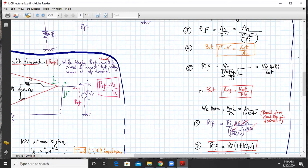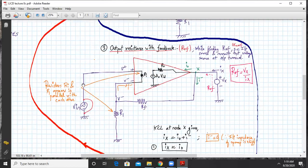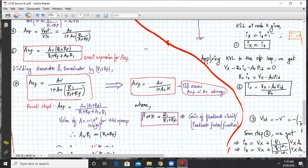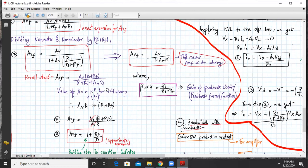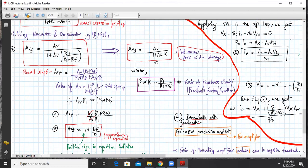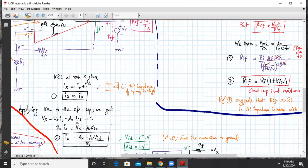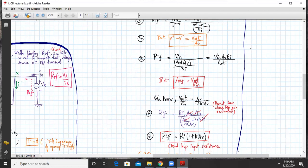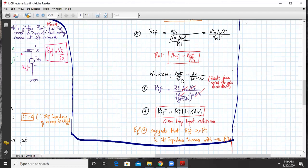We also know that V out upon V in is nothing but my AVF. V out upon V in is the closed loop gain with feedback, that is AV upon 1 plus AV into K, where K is R1 upon R1 plus RF. V out upon V in is given by AV upon 1 plus KAV. We substitute these values.